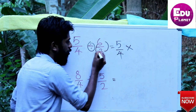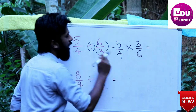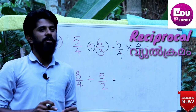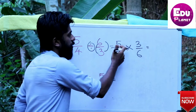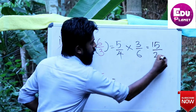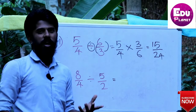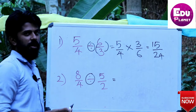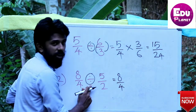Now for the third operation — multiplication. We are going to use the reciprocal method. If you want to multiply fractions, simply multiply numerator by numerator and denominator by denominator. For division, use the reciprocal: flip the second fraction and then multiply. 5 by 3 is 15, 4 by 6 is 24, so the answer is 15 by 24.